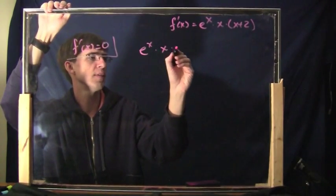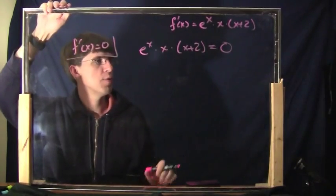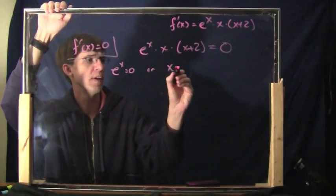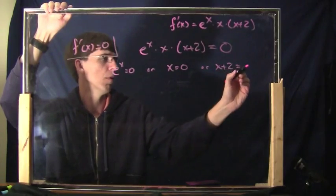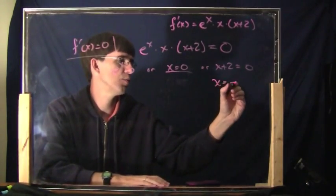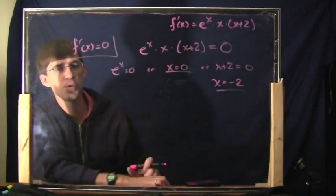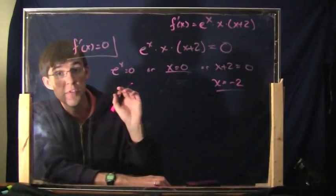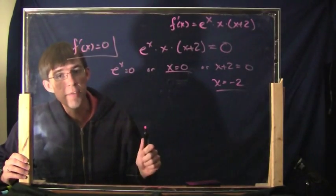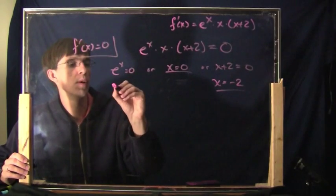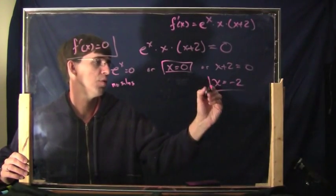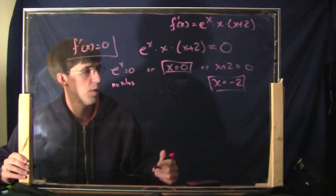Where is the derivative equal to zero? That means e to the x times x times (x + 2) equals zero. When you have things multiplied together equal to zero, you set each factor equal to zero. So: e to the x equals zero, or x equals zero, or x + 2 equals zero. x equals zero is a critical number. From x + 2 = 0, x equals negative two — that's another critical number. As for e to the x = 0: that has no solutions. e to the x is never zero — it's always positive. So x equals zero and x equals negative two are the critical numbers.